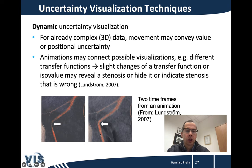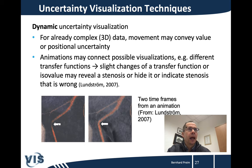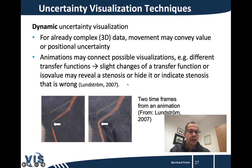Depending on the specific transfer function, the user could get the impression that there is a severe stenosis or that everything is completely fine. An animation slightly changes the values specifying a transfer function so the user sees these different interpretations of the data. If one of the visualizations shows that the vessel follows a normal course and has normal thickness distribution, there is no problem. But if several specifications lead to an appearance of severe stenosis, that is probably misleading — due to small inhomogeneities in contrast agent distribution, particularly where the vascular structure strongly changes direction. This is a recognized and very good example of uncertainty visualization in medicine.